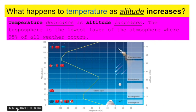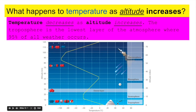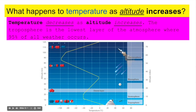What happens to temperature as altitude increases? We've been studying the layers of the atmosphere — troposphere, stratosphere, mesosphere, thermosphere. We live in the troposphere, where temperature decreases as altitude increases. The troposphere is the lowest layer of the atmosphere where 95% of all weather occurs. Most airplanes fly near the tropopause, the space between the troposphere and the stratosphere. In the troposphere, as you increase altitude, temperature decreases, causing air to cool and clouds to form.